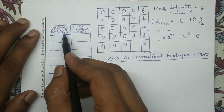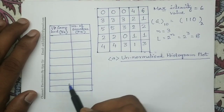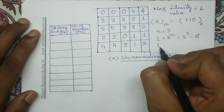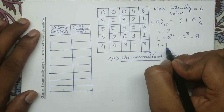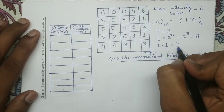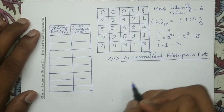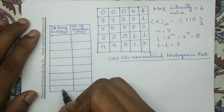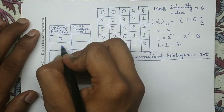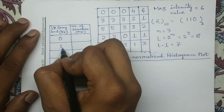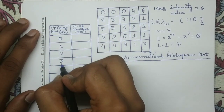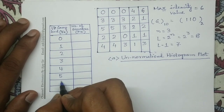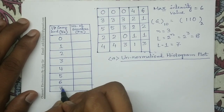RK we have to vary from 0 to L-1. Since the value of L is equal to 8, the value of L-1 is equal to 7, and hence we have to vary RK from 0 to 7. So we write here 0, 1, 2, 3, 4, 5, 6, 7.